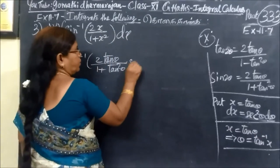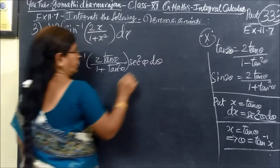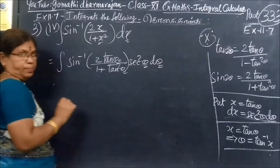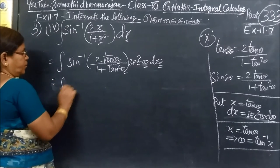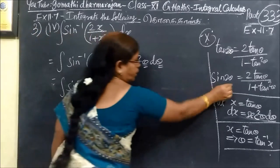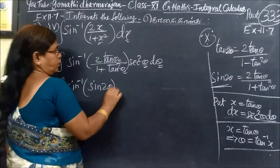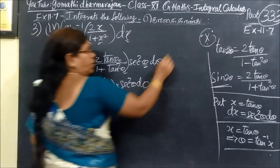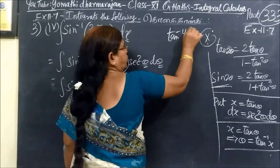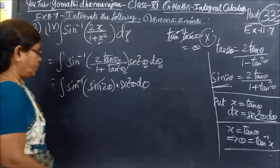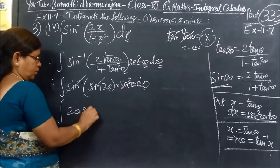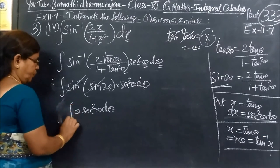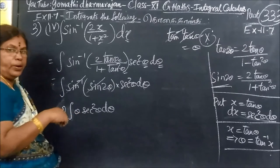So we have sec² θ dθ. You write: integrate sin inverse of sin 2θ into sec² θ dθ. This is all in terms of θ. So here you are writing 2θ times sec² θ dθ.